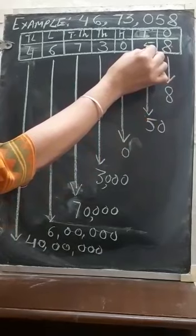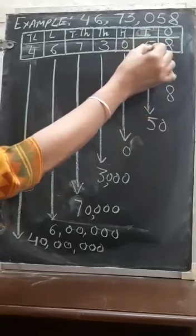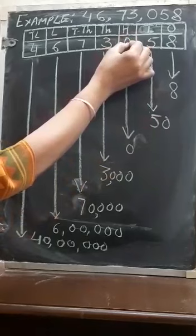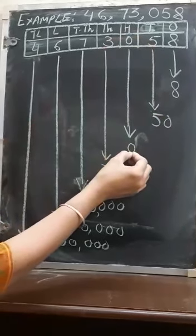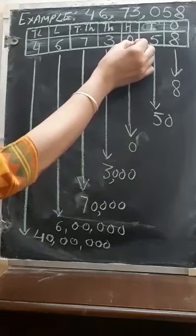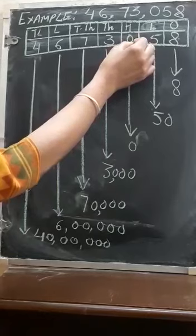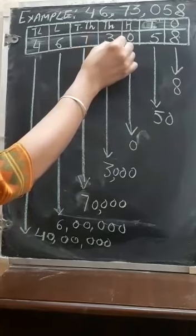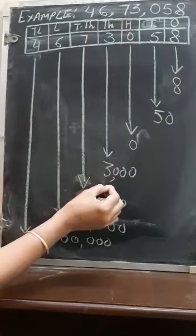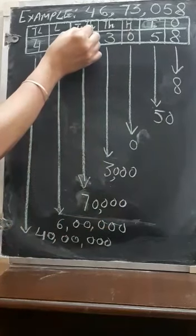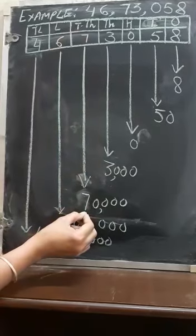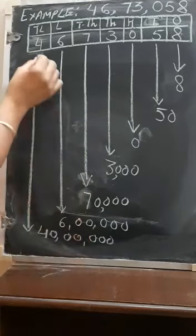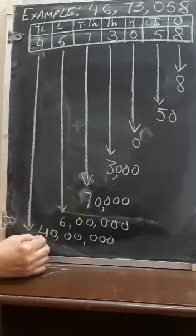5 is at the tens place. 5 is the face value and 10 is the place, so 5 multiplied by 10 gives 50. 0 is at the hundreds place — 0 multiplied by 100 gives 0, as 0 always has the same face value and place value. 3 at the thousands place: 3 multiplied by 1,000 gives 3,000. 7 multiplied by 10,000 gives 70,000. 6 multiplied by 1,00,000 gives 6,00,000. And 4 multiplied by 10,00,000 gives 40,00,000.